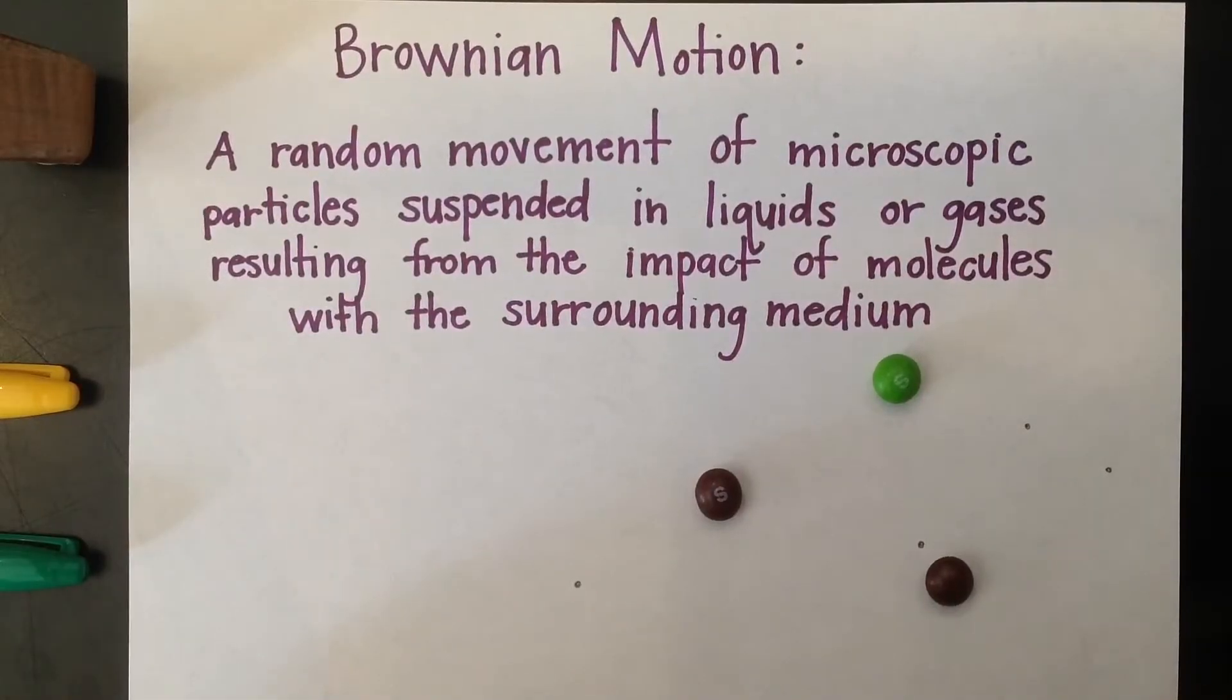Okay, so Brownian motion is a random movement of microscopic particles suspended in liquids or gases resulting from the impact of molecules with the surrounding medium.